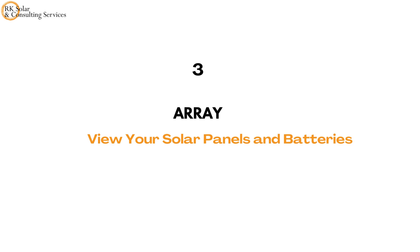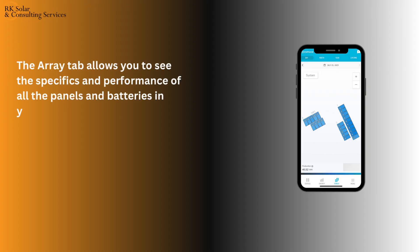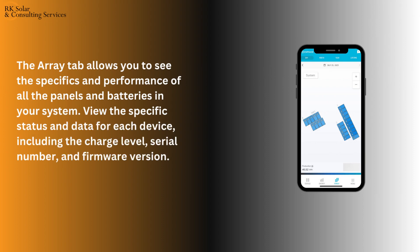Next, let's look at the array tab. The array tab allows you to see the specifics and performance of all the panels and batteries in your system. View each device's specific status and data, including the charge level, serial number, and firmware version.